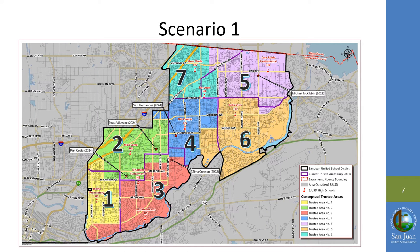Here we have the Scenario 1 map. Area 1 covers the southwestern portion of the district in yellow. Area 2 covers the central western portion in green. Area 3 covers the southernmost portion in red. Area 4 covers the central portion in blue. Area 5 covers the northeastern portion in purple. Area 6 covers the eastern portion in beige. And Area 7 covers the north central portion in aqua. The purple lines on the map represent the current trustee boundaries. We will walk through all of these changes with zoomed-in aerial maps.